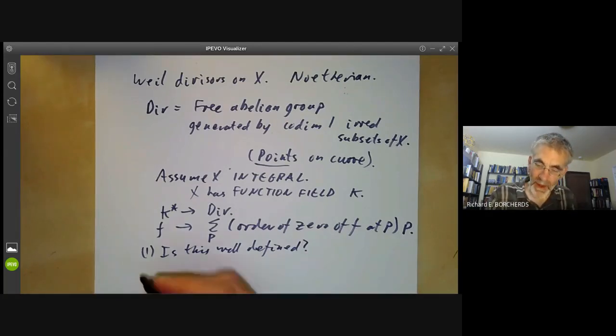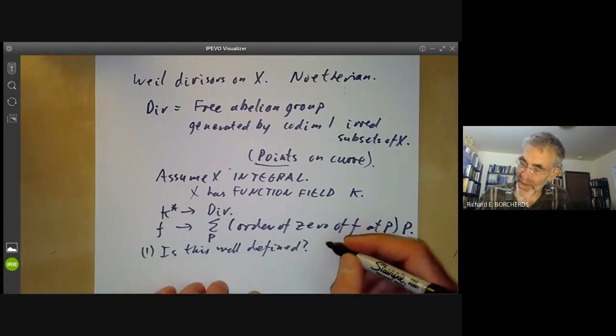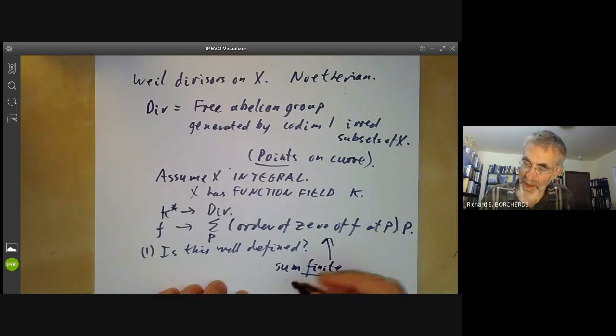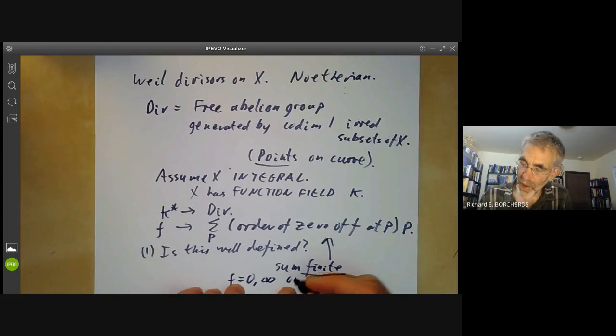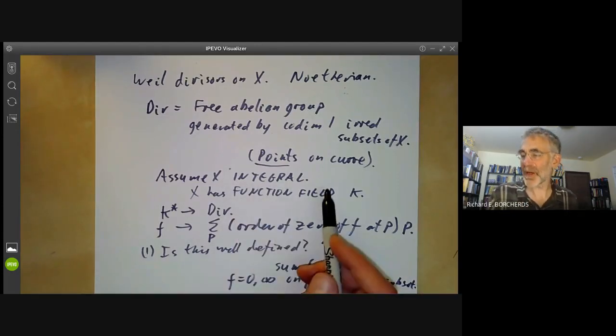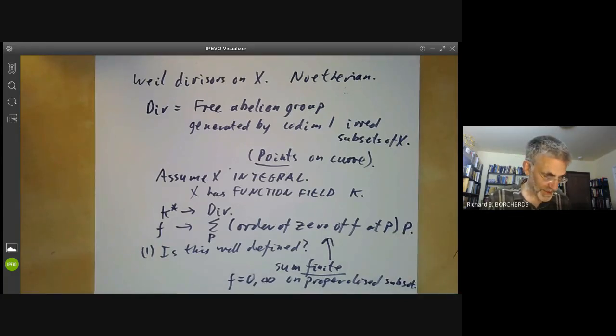First, we need this sum to be finite. This sum is finite essentially because F equals zero or infinity on a proper closed subset, and since the scheme is Noetherian, a proper closed subset is going to be the union of a finite number of irreducibles, so you only get a finite number of varieties P turning up here.